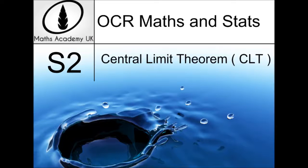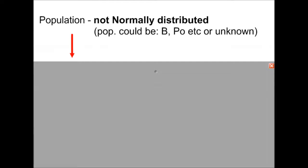The Central Limit Theorem. The Central Limit Theorem states that if we start off with a population which is not normally distributed — that is one of the key conditions — it could follow any other distribution, like binomial, Poisson, or some unknown underlying distribution, but it must not be normally distributed.